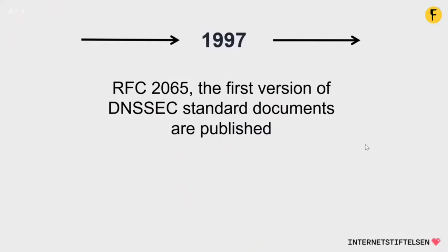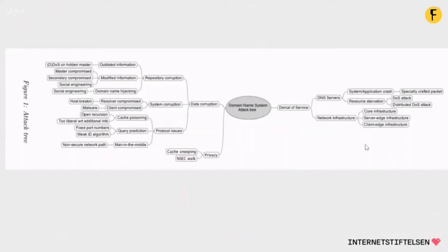DNS is of course victim to different attack opportunities. This picture shows the attack tree of the domain name system. DNSSEC protects against some of it, but not all. Everything on the left side — data corruption — is what DNSSEC covers, such as cache poisoning, where corrupt DNS data is introduced in a resolver's cache causing the nameserver to return an incorrect IP address, redirecting traffic. Or DNS hijacking by malicious code causing your computer's TCP/IP configuration to point to a fake DNS server controlled by an attacker, or by modifying the behavior of a trusted DNS server so it does not act according to internet standards. Such modifications can be made for evil reasons such as phishing.